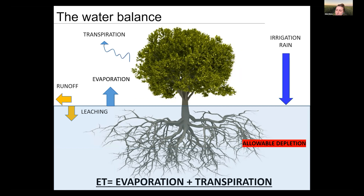If we don't calculate correctly how much water was used, we'll apply too much water, which is lost by runoff or leaching, making irrigation less efficient and potentially harming the trees. As mentioned, it's difficult to kill an olive tree by reducing water, but it's very easy to harm trees with over-irrigation. This is why it's so important to know how much water to apply to your orchard.